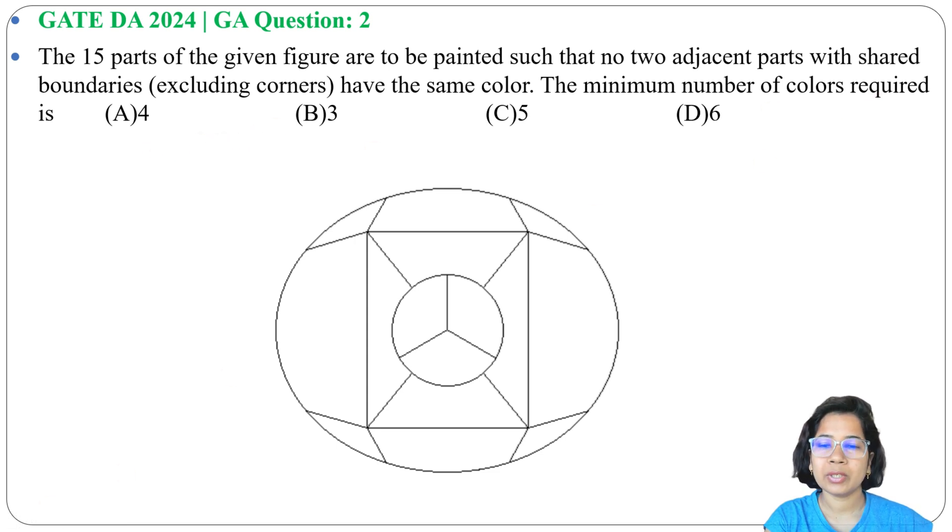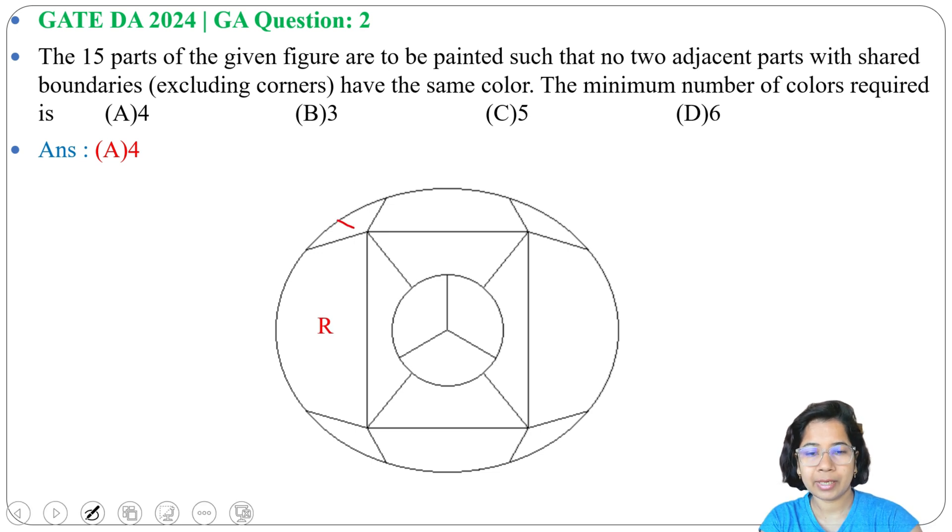Here the answer will be 4. Let me show you how. Suppose we assign red, so red can be here. After assigning red color here, red cannot be here as both have a common edge. Red cannot be here, red cannot be here. So corners can be shared, right? That's why we can assign red color here, here, here.